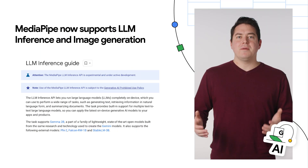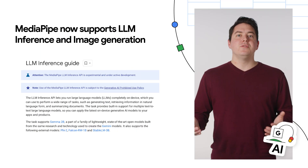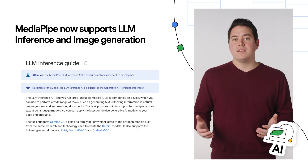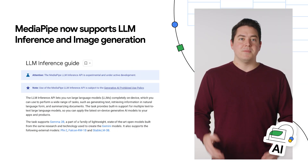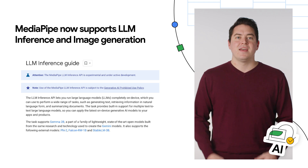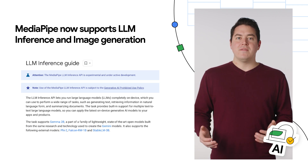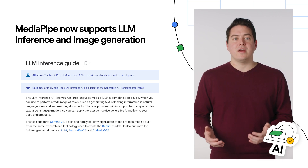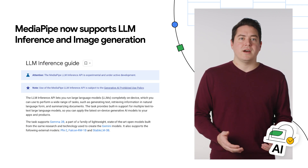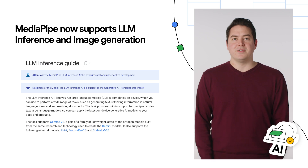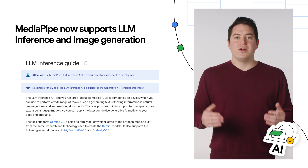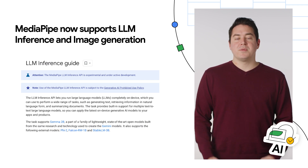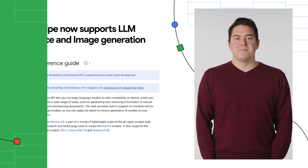And finally, MediaPipe now supports two new generative AI tasks, including LLM inference and image generation. The LLM inference API supports Gemma 2B and can run on-device generative AI text-to-text generation. You can learn more about MediaPipe on developers.google.com.